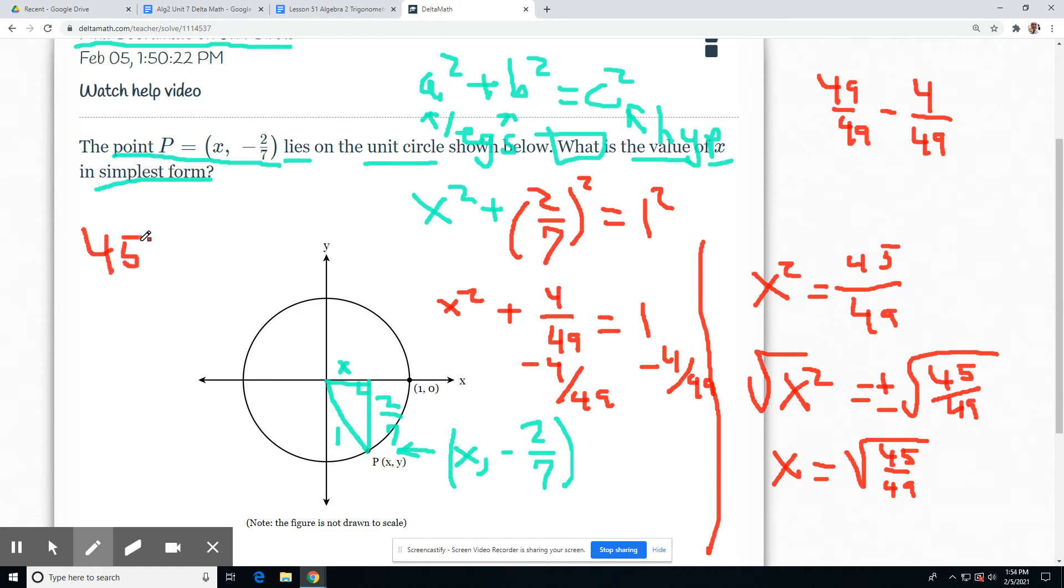45 breaks down into 5 times 9. And 9 breaks down into 3 times 3. So the square root of 45 is equal to the square root of 3 times 3 times 5. My trick is I pull out a pair of 3s. It comes out as 1.